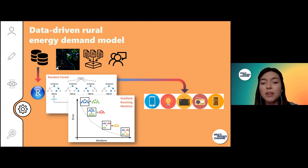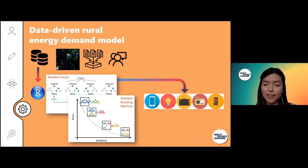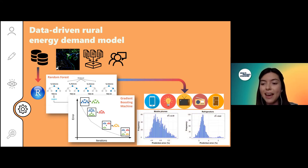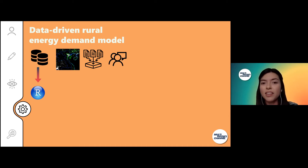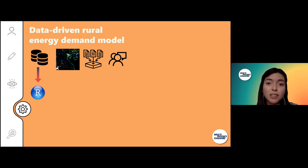I'm creating these models to identify how many household electrical appliances they would have, and then I evaluate each of the models based on the prediction error. Now that we know how many appliances they have in their houses, how would we know when they are using these appliances? When are they turning on the lights, when are they turning on the TV, at which time of the day?